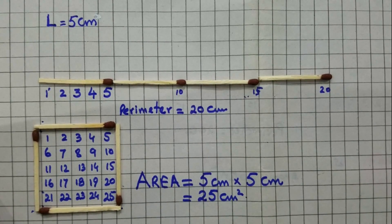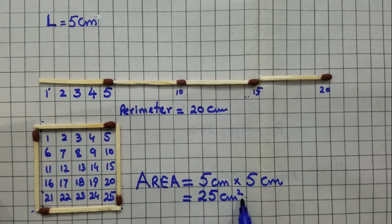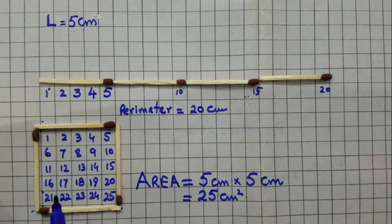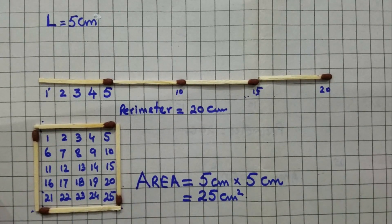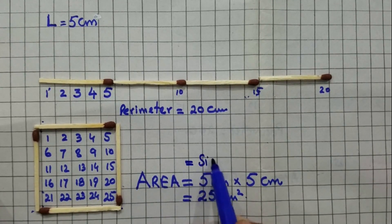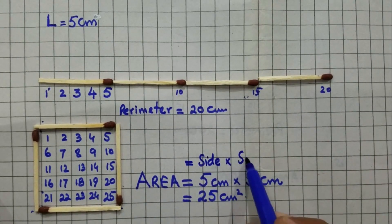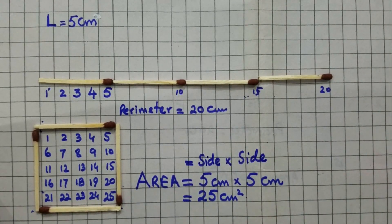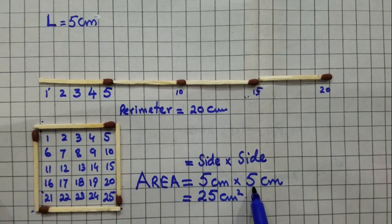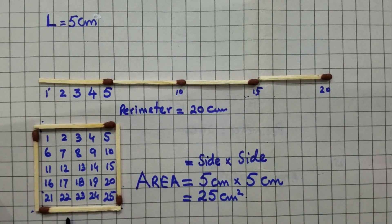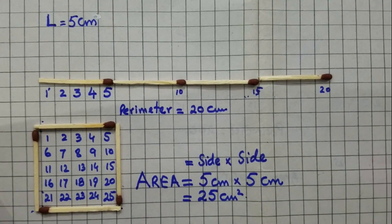Therefore we can calculate the area of a square, which is equal to 25 square centimeter. Each length is 5 cm — this is 5 cm, 5 and 5. The formula for finding the area of a square is equal to the side into the side. This is side into side. We get 5 cm long one side and 5 cm long the other side. We get 5 into 5 = 25 square centimeter.